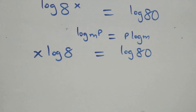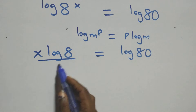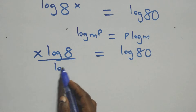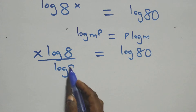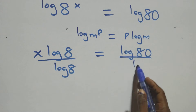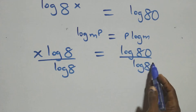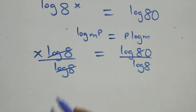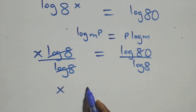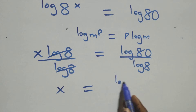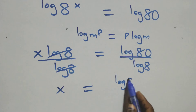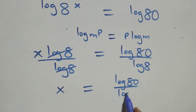The next step: we divide both sides by log 8 — divide this side by log 8, and also divide this side by log 8. Log 8 cancels on the left, and we have x equals to log 80 over log 8.